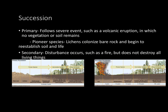Looking at secondary succession, that's when a disturbance occurs, such as a fire, but does not completely destroy all the living things. You can see there's a fire, and then years where there's not very much vegetation, but then in 5 to 150 years the forest repopulates as well.